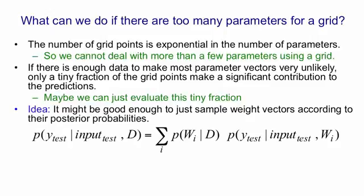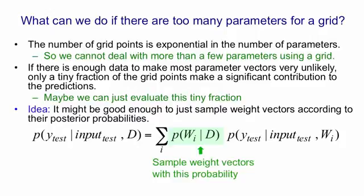Now instead of adding up all the terms in that sum, we could just sample terms from that sum. What we do is we sample the weight vectors in proportion to that probability — either we sample them or we don't, so they get a weight of 1 or 0. The probability of getting a 1, that is the probability of being sampled, will be their posterior probability. So that will give us the correct expected value for the right-hand side. It'll have noise due to the sampling, but it'll have the correct expected value.